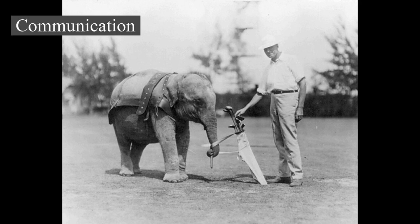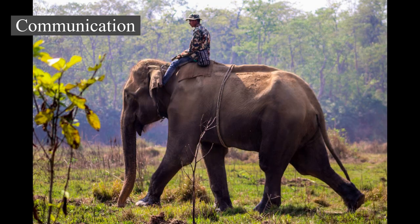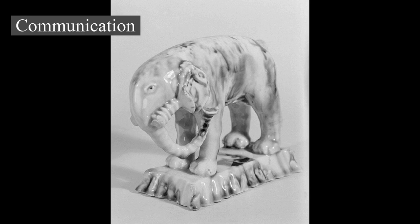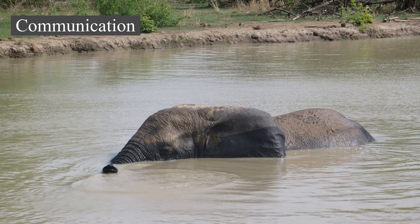For Asian elephants, infrasonic calls have a frequency of 14–24 Hz, with sound pressure levels of 85–90 dB and last 10–15 seconds. For African elephants, calls range from 15 to 35 Hz, with sound pressure levels as high as 117 dB, allowing communication for many kilometers, with a possible maximum range of around 10 km (6 mi). Elephants are known to communicate with seismics — vibrations produced by impacts on the Earth's surface or acoustical waves that travel through it. An individual running or mock charging can create seismic signals that can be detected at distances of up to 32 km (20 mi), while seismic waveforms from predator alarm calls travel 16 km (10 mi).